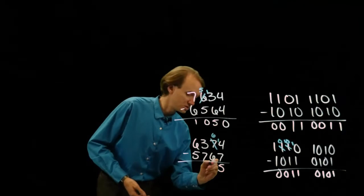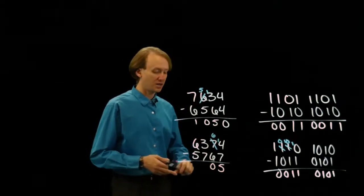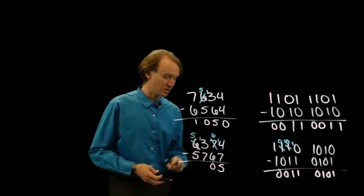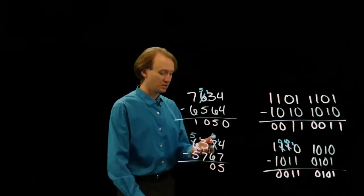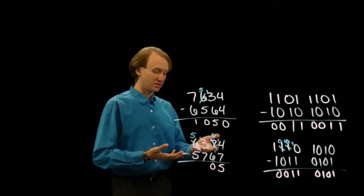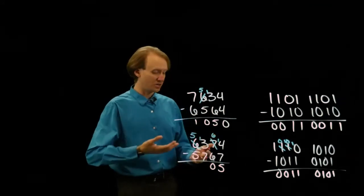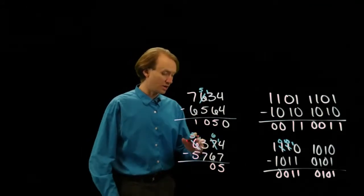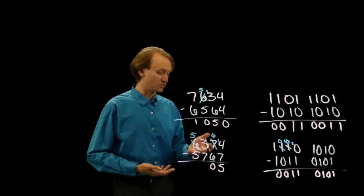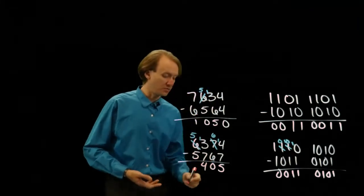Then 6 minus 6 is 0. 3 minus 7 — again, I'll need to borrow something. Now I have a 13, and this should leave me with 4. I can get there either by saying that this 13 in octal is 11 in decimal, and 11 minus 7 is 4. Or I can say 8 minus 7 is 1, and 1 plus 3 is 4. And then 5 minus 5 is 0.